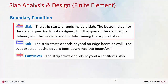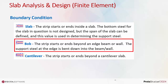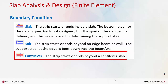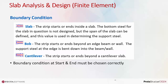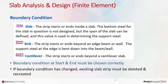Boundary conditions must be set carefully. 'Slab' means the strip starts and ends inside a slab — the support top bar will extend into the last slab. 'Bending of bar' means the strip starts and ends beyond an edge beam or wall — the support steel at the end will bend down into the beam or wall. 'Cantilever' means the strip starts or ends beyond a cantilever slab. The boundary condition at start and end must be chosen correctly, otherwise slab design will be erroneous. If the boundary condition changes due to a change in slab layout, the existing slab strip must be deleted and recreated.